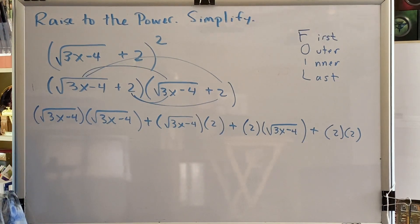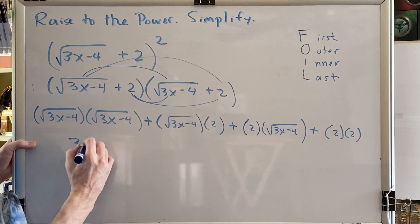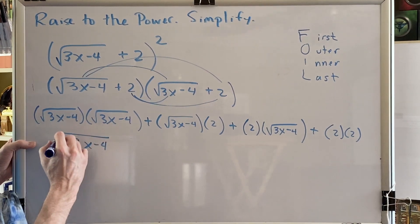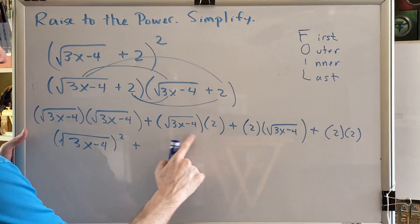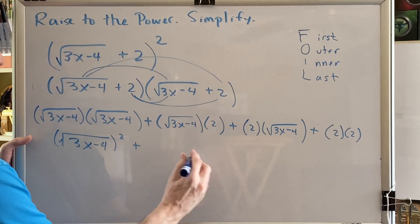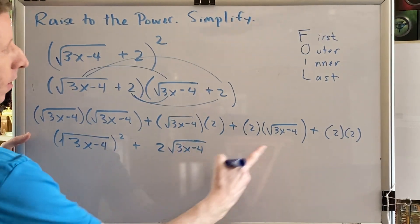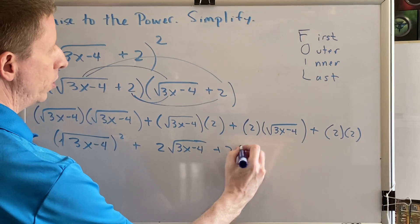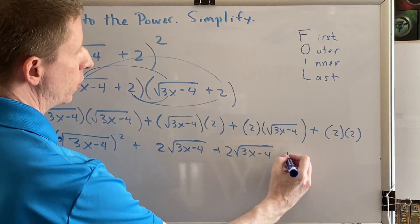Now we begin to simplify. Square root times an identical square root can be rewritten using an exponent of 2. A radical times a non-radical, the radical goes at the end. So this is 2 times the square root of the difference 3x minus 4. This is also 2 times the square root of the difference 3x minus 4. And of course, 2 times 2 is 4.